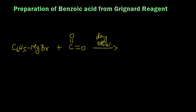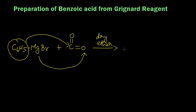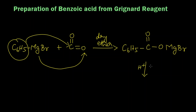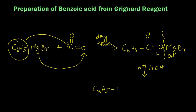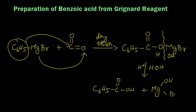What happens is this phenyl group will get attached to this carbon, and the MgBr will get attached to this oxygen. So we get an intermediate: C6H5-C(=O)-O-MgBr. On further acid hydrolysis with H2O, the bond gets cleaved — hydrogen gets attached to the carboxylic group and OH to the magnesium — giving us C6H5-C(=O)-OH, which is benzoic acid, and MgBrOH, which is hydroxy magnesium bromide.